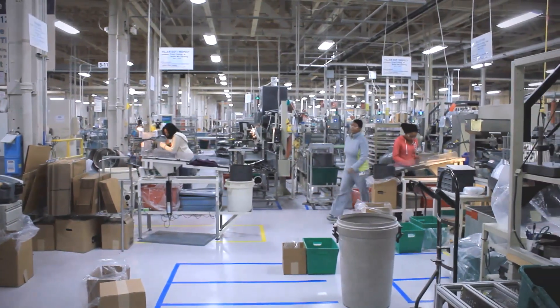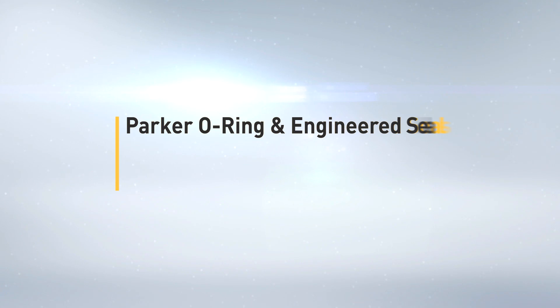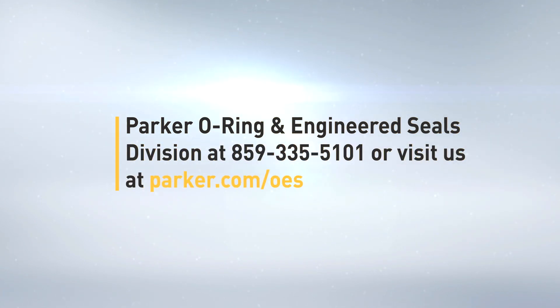For more information on hollow O-rings or other custom seal products, contact Parker O-Ring and Engineered Seals Division at 859-335-5101 or visit us at parker.com/oes and chat with an engineer.